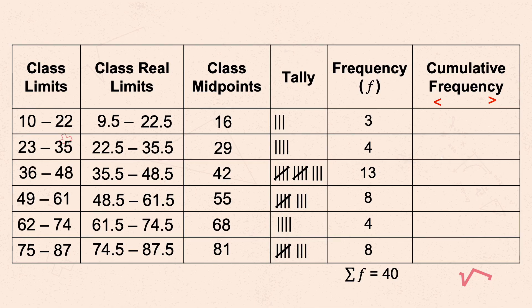The frequencies are: class 1 = 3, class 2 = 4, class 3 = 13, class 4 = 8, class 5 = 4, class 6 = 8. Use the symbol Σf to denote the sum of all frequencies. This tells you whether your frequencies are correct — the total sum must equal the sample size. Since adding all frequencies gives 40, which matches our sample size of 40 diabetics, we know the frequencies are correct.